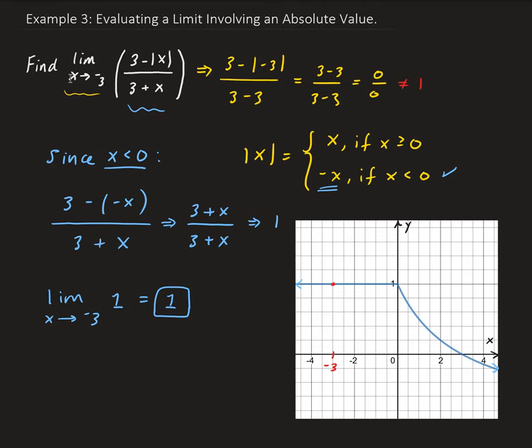Down here at the bottom you can see the graph of the function 3 minus absolute value of x, divided by 3 plus x. As x approaches negative 3 from both sides, the y-values remain at the constant value of 1. This confirms graphically that the overall limit exists and equals 1.